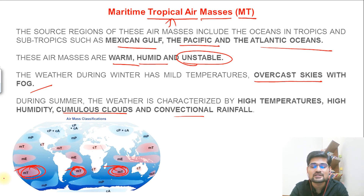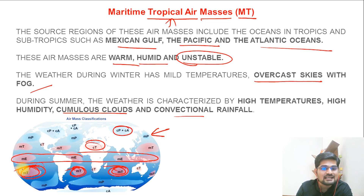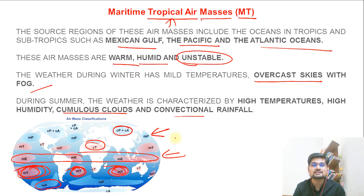So these are the five major air mass types — from CP and CA to CT to MT and MP — which form the concept of air masses. Now that we have learned about the concept of air mass, its formation, and its various types, in the lectures to come we will be talking more about air fronts. Stay tuned, stay safe, and all the best wishes.